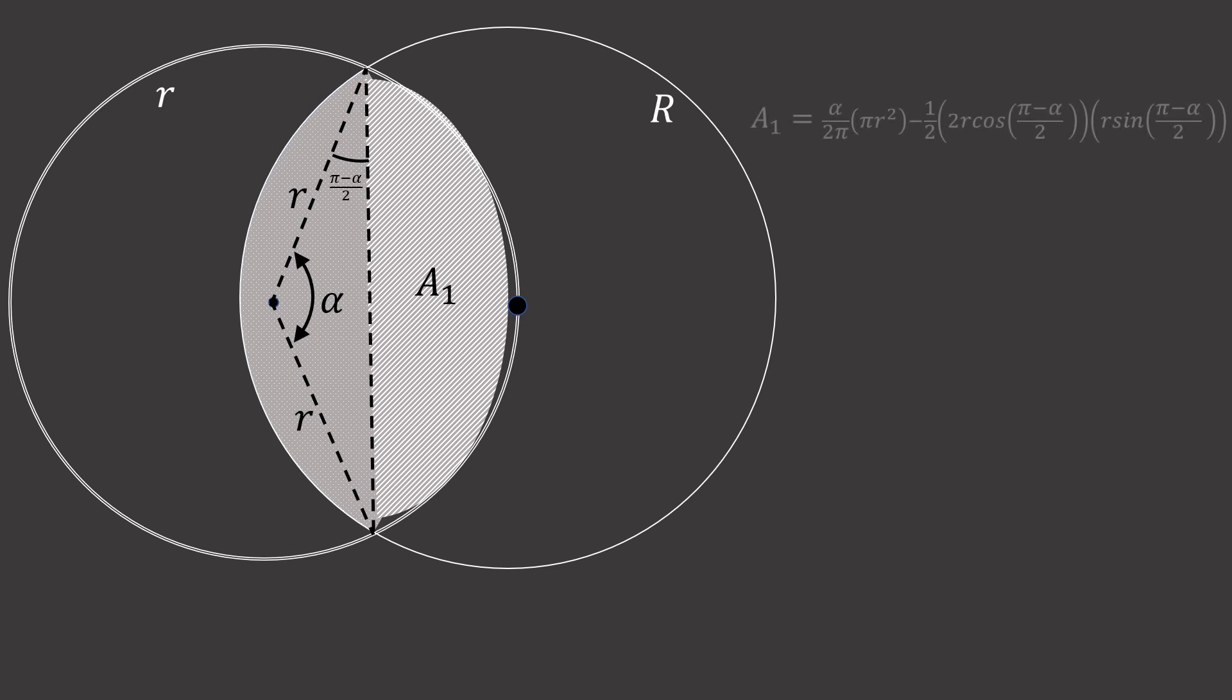We can find that area by first finding the area of A1, which is that segment subtended by angle alpha. We do that by finding the area of the sector, which is alpha over 360 degrees, or over 2π, times πr², minus the area of the triangle, which is half the base, which is 2r cosine(π - α)/2, times the height, which is r sine(π - α)/2. Now we can simplify that expression to r²/2 times (α - sin α).